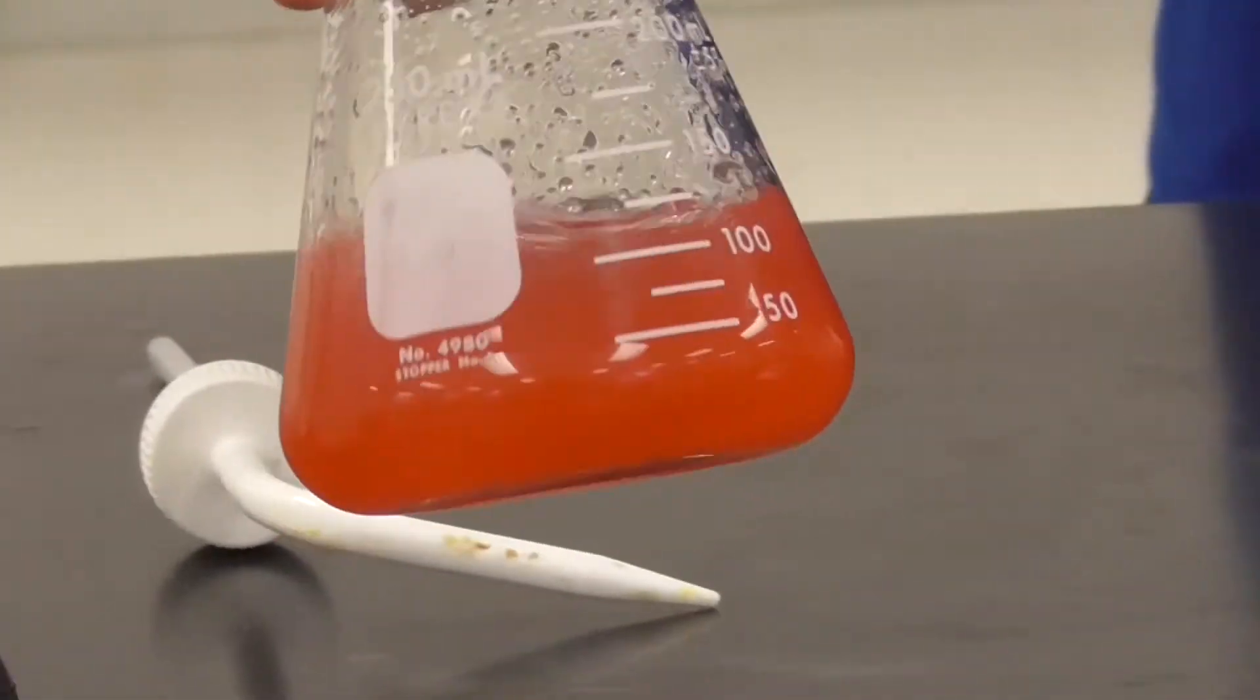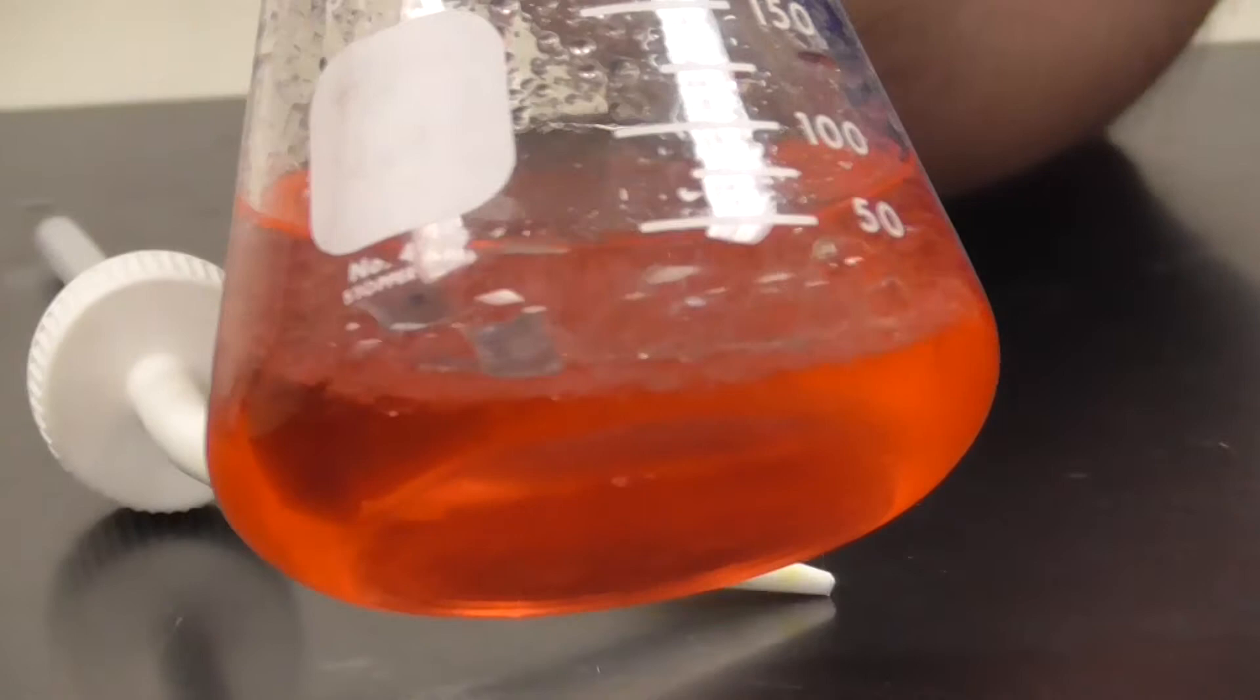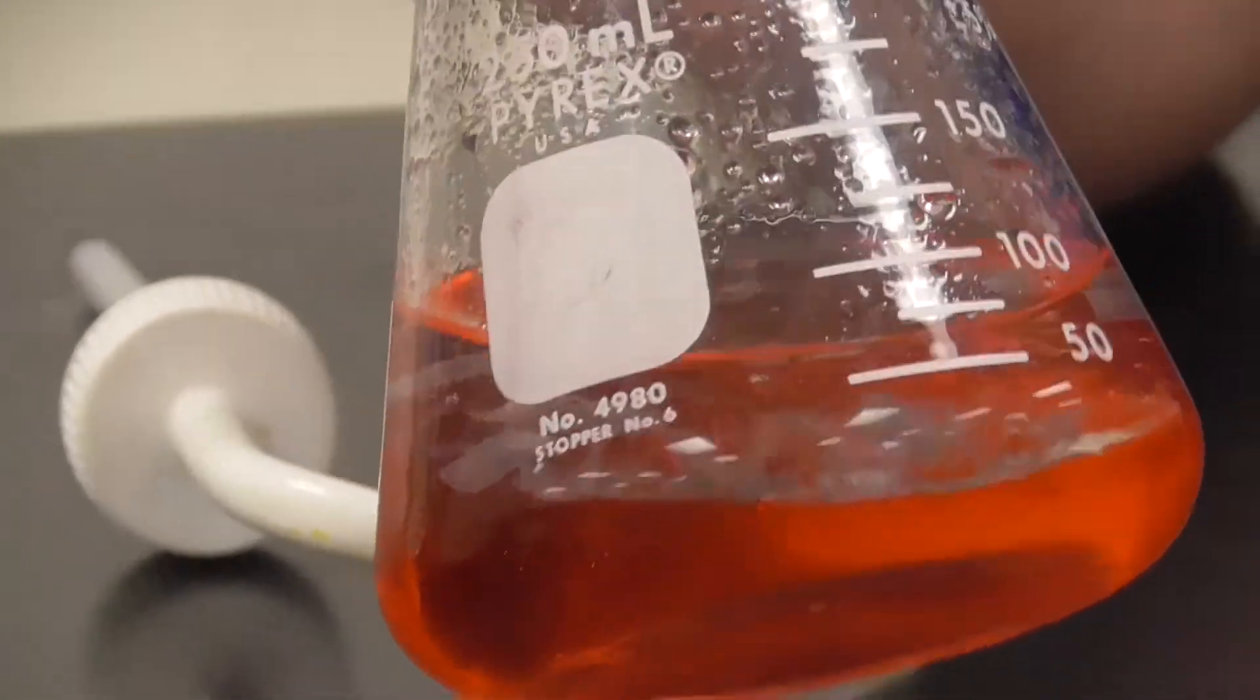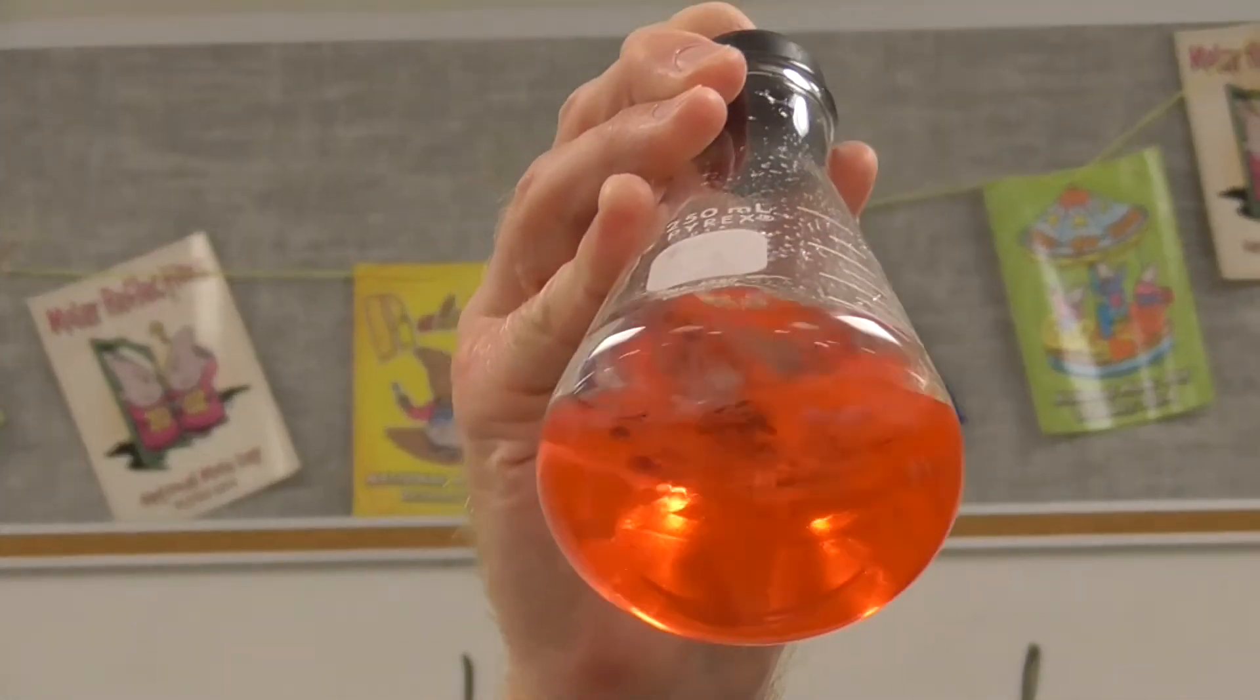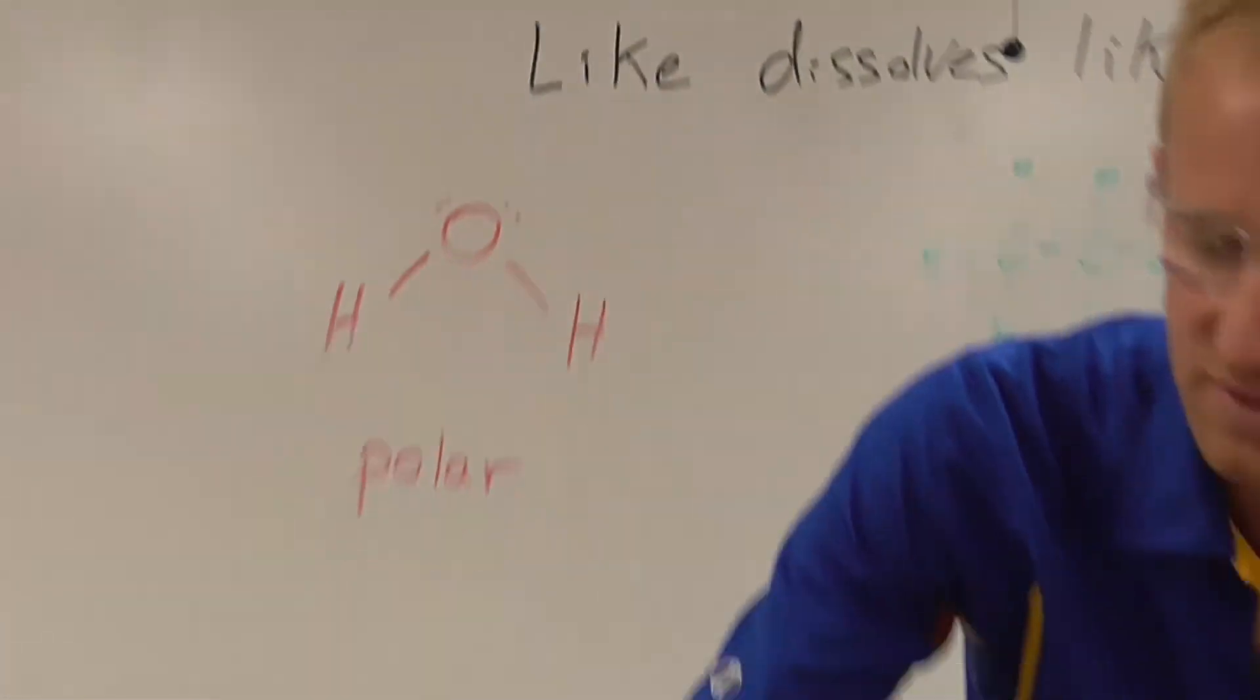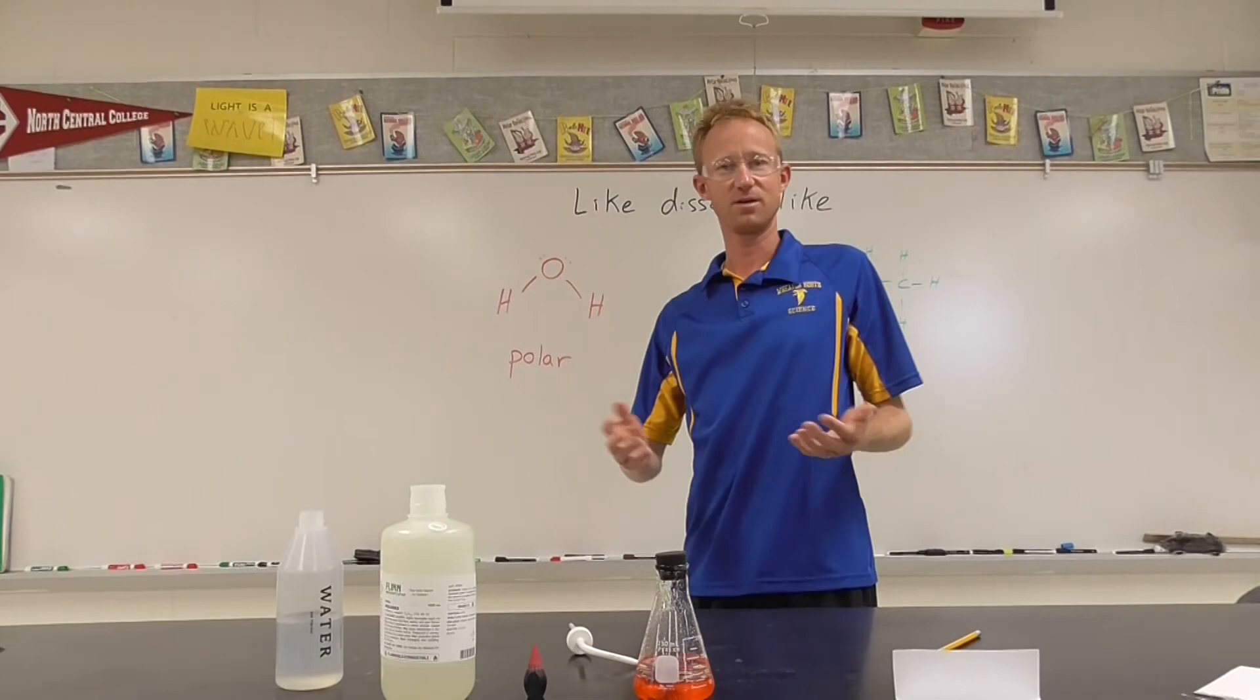If we were to shake it again, we would have the same results. All of the graphite, which is non-polar, orients itself towards the non-polar hexane. And if you look underneath, the cellulose side of the paper is all oriented with the water. So the purpose of this demonstration is to provide some evidence that like dissolves like.